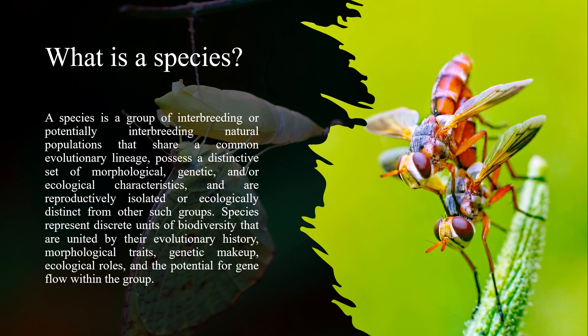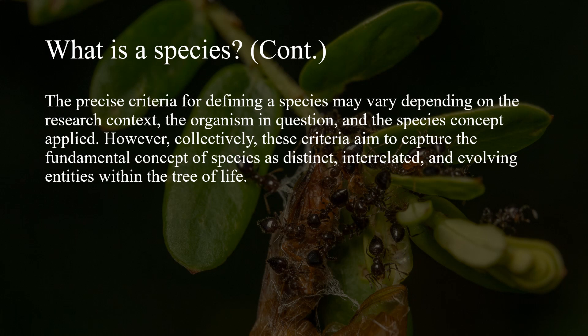Species represent discrete units of biodiversity that are united by their evolutionary history, morphological traits, genetic makeup, ecological roles, and the potential for gene flow within the group. As you can see, there are many criteria incorporated to define a species. We will talk about each of these criteria and definitions in various species concepts in future videos. The precise criteria to define a species may vary depending on the research context, the organism in question, and the species concept applied.